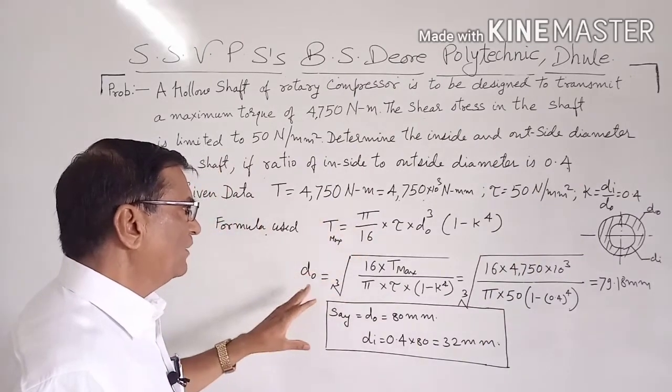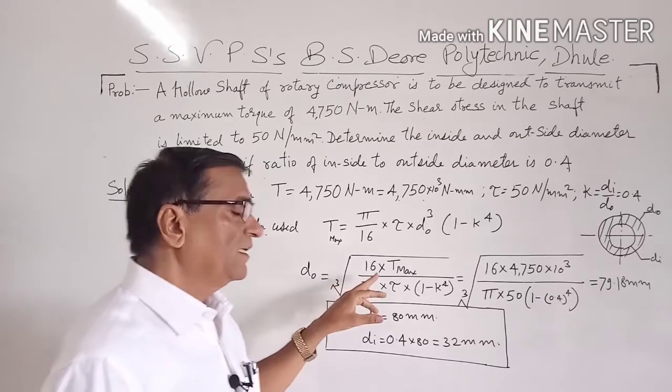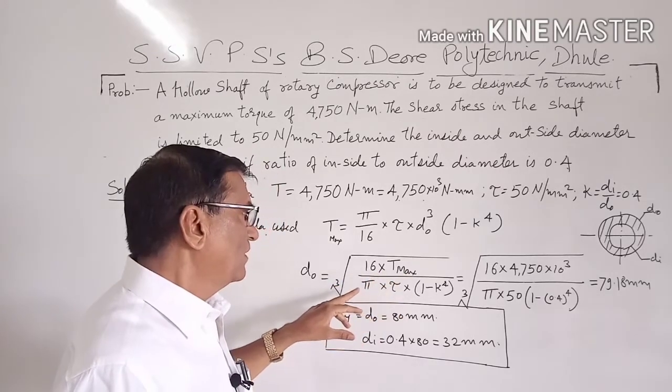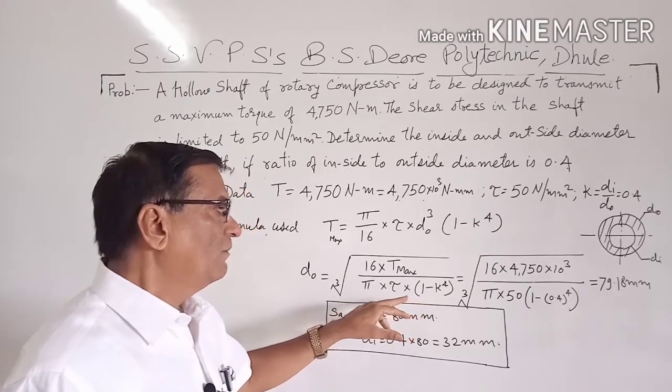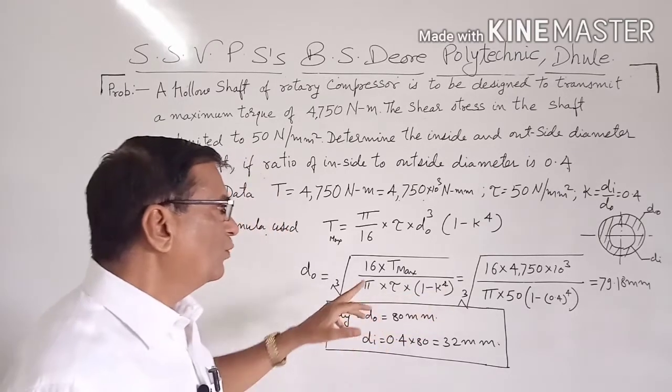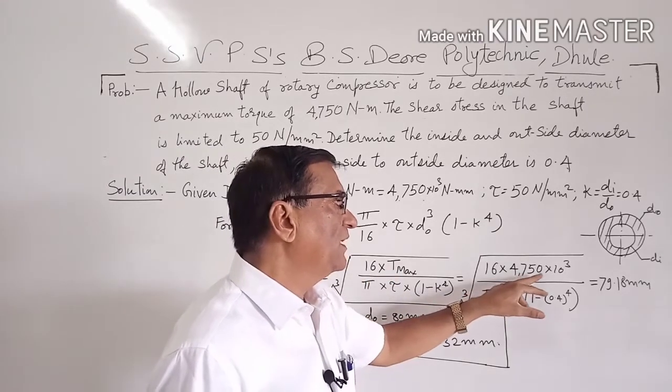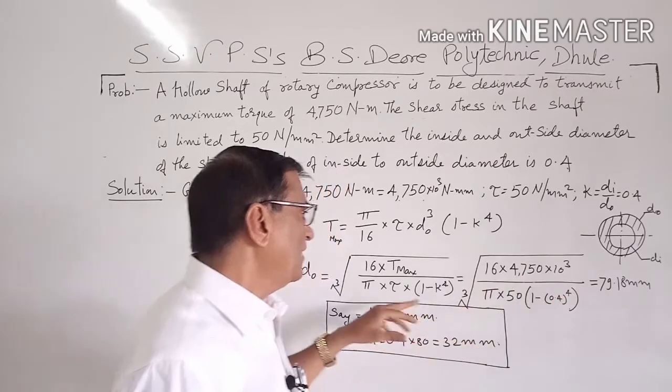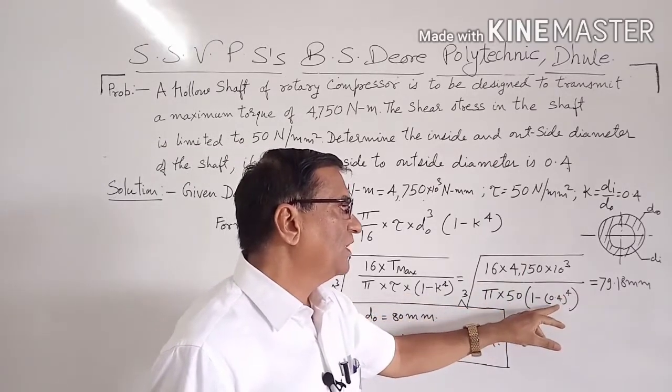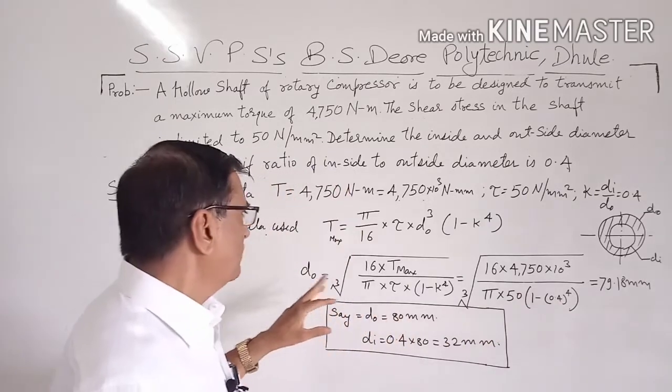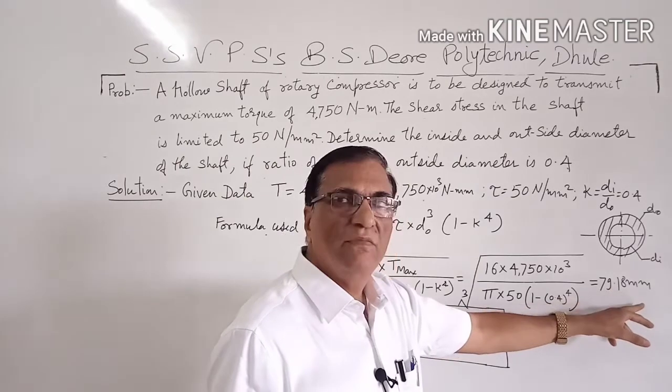Putting the values of T maximum equal to 4750 times 10 raised to 3, tau equal to 50 Newtons per millimeter squared, and K equal to 0.4, we have the value of outside diameter equal to 79.18 millimeters.